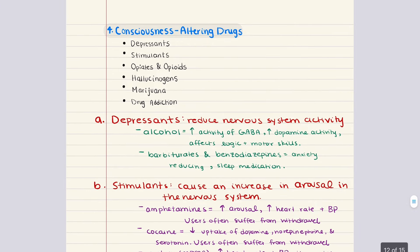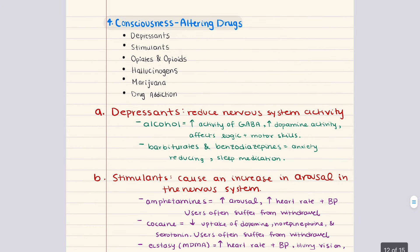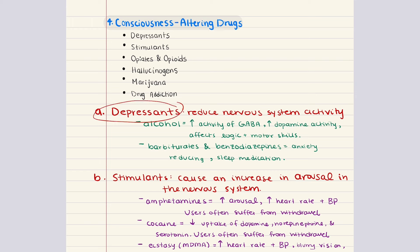Now we move into the fourth objective: consciousness-altering drugs. These are generally described in four different groups: depressants, stimulants, opiates, and hallucinogens. Marijuana falls under multiple categories — it has depressant, stimulant, and hallucinogenic effects, so we'll consider it separately. Let's start with depressants.